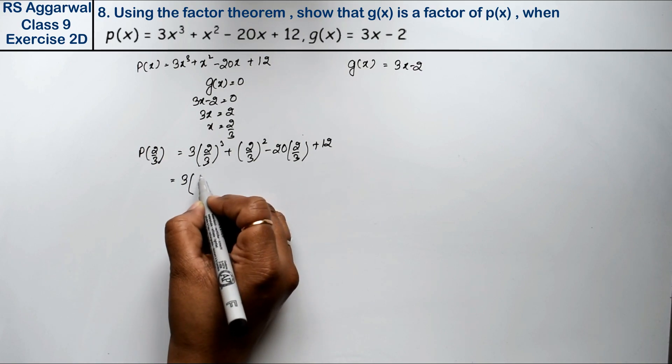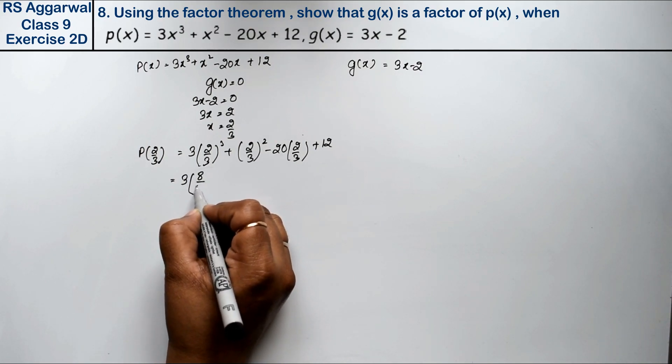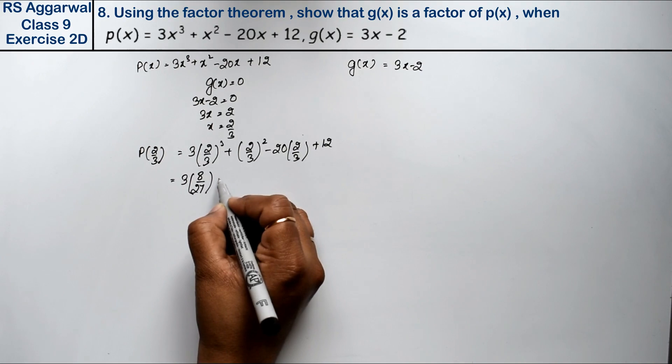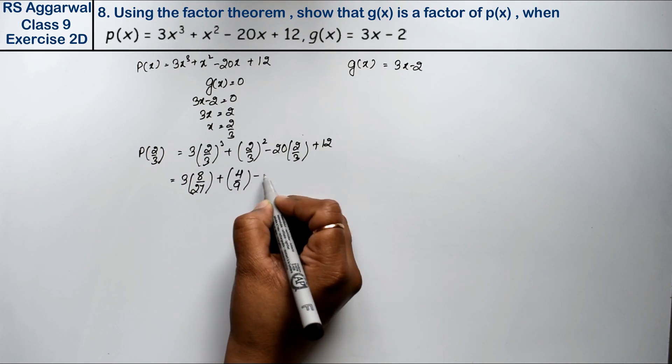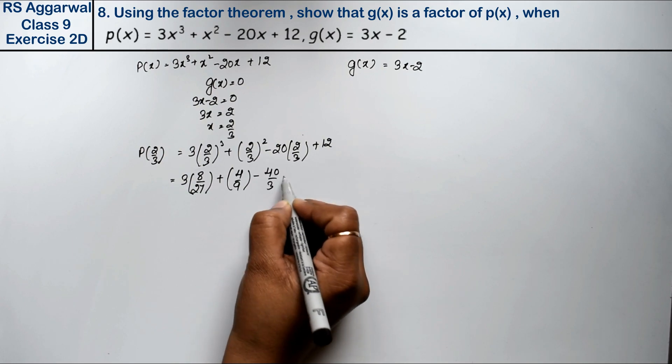Calculating: 2 times 2 is 4, times 2 is 8, over 3 times 3 is 9, times 3 is 27. Plus 2 times 2 is 4 over 3 times 3 is 9, minus 40 over 3 plus 12.